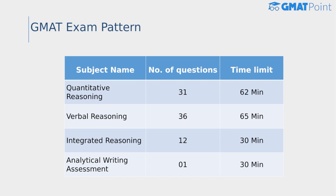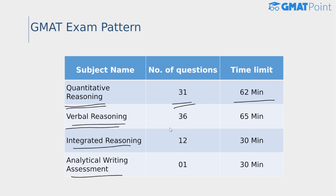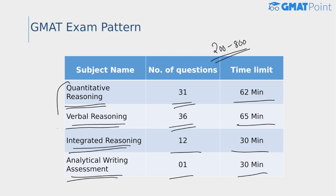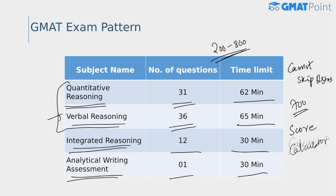Now, to understand how your GMAT scores are calculated, let's look at the exam pattern. There are four sections: Quantitative Reasoning — 31 questions, 62 minutes; Verbal Reasoning — 36 questions, 65 minutes; the IR section — 12 questions, 30 minutes; and the AWA section — one question, 30 minutes. Your overall GMAT score, ranging from 200 to 800, includes only your quantitative and verbal reasoning scores. You cannot skip or go back to any question, and your score is valid for five years. Most top B-schools require around 700. Do check out our GMAT score calculator — the link is in the description.